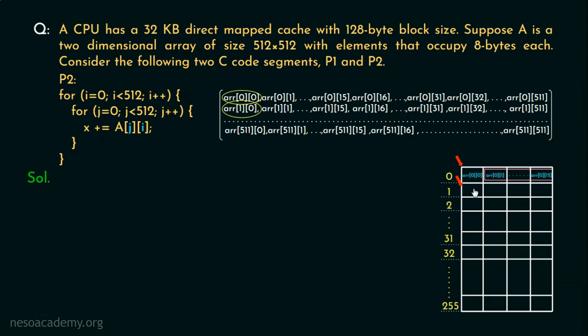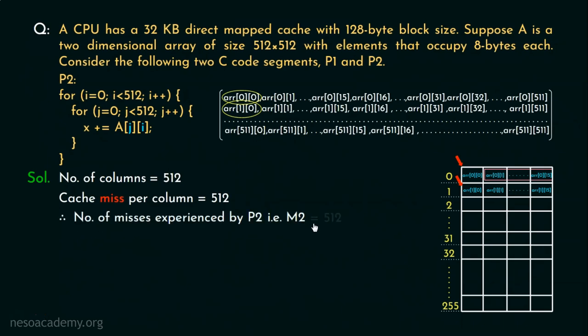Since it's absent in the cache it's again going to be a compulsory miss. So due to our mechanism the array element arr[1][0] will be brought into the cache. But along with that the entire group of elements arr[1][1] up until arr[1][5] will again be placed in the same cache line 1. Now there are 512 columns in the entire array. And due to the modified orientation of i and j in P2 the number of cache misses per column is again going to be 512. Therefore the number of misses experienced by P2 that is M2 is 512 multiplied by 512 which is nothing but 262144.